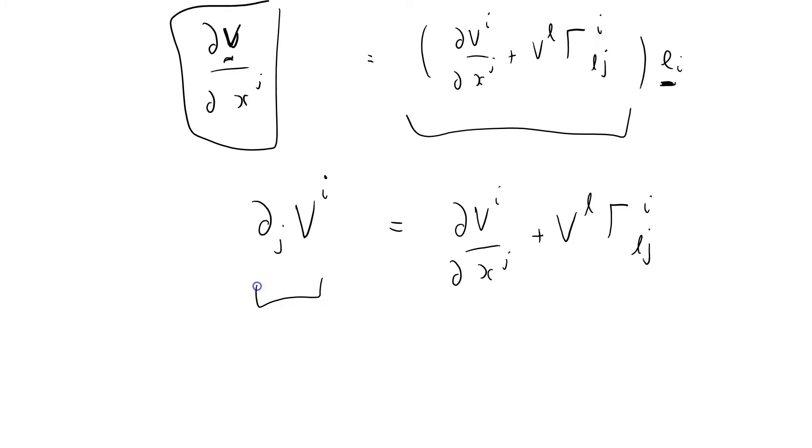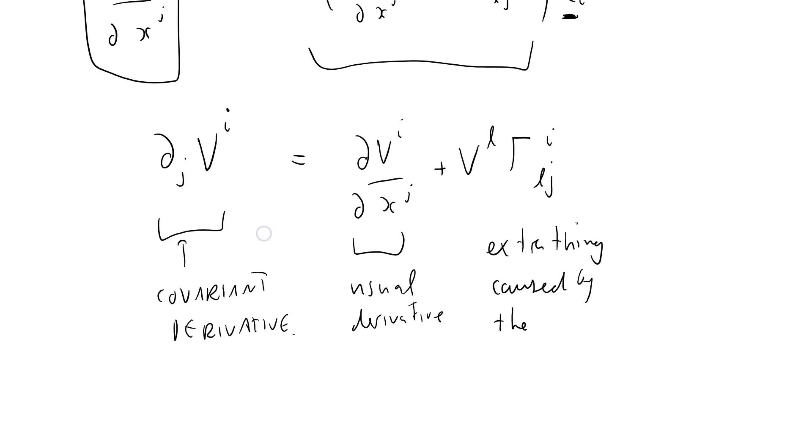This thing here is called the covariant derivative. And it's equal to the normal, the usual derivative, or the straightforward derivative. Plus an extra thing here caused by the coordinate bases changing. Coordinate bases changing from point to point.